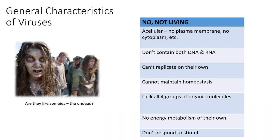On their own, viruses cannot replicate. If there was a virus on an inanimate surface — a countertop, a windowsill, a doorknob, a Kleenex — they cannot replicate and create new viruses. They are completely dependent upon a host in order to replicate. They also do not maintain homeostasis, which is something living organisms do to survive in their environment. For example, if we overheat, we sweat to cool down; if we're too cold, we shiver to generate heat. Viruses cannot respond to external stimuli or maintain those proper conditions.